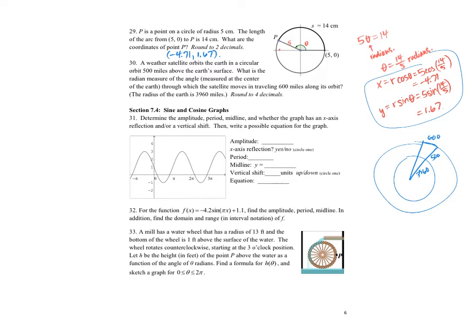No, I want to find the angle. So I know S is equal to R theta. And so my radius, so my S is 600. My radius is 3960 plus 500. My radius is 4460 times theta. So theta is equal to 600 divided by 4460. So 0.1345 radians.